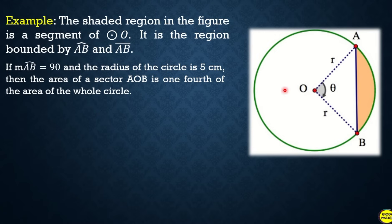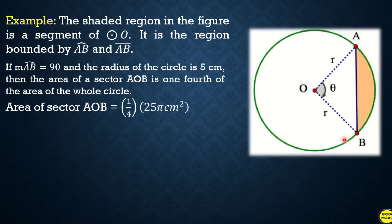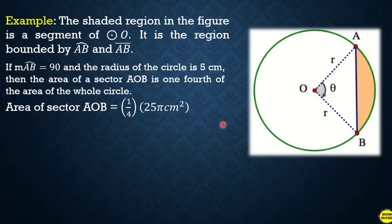Why 1/4? Because the whole circle measures 360°, and if arc AB measures 90°, that is 1/4 of 360. To find the area of sector AOB, multiply the ratio (90/360 = 1/4) by the area of the circle. The area of the circle is pi r squared; with radius 5 cm, that is 25π square cm.